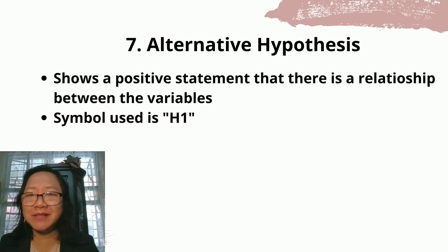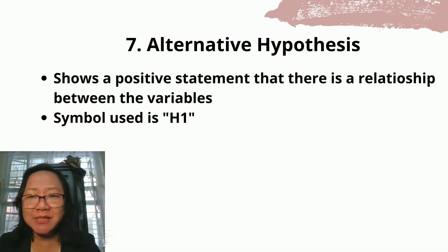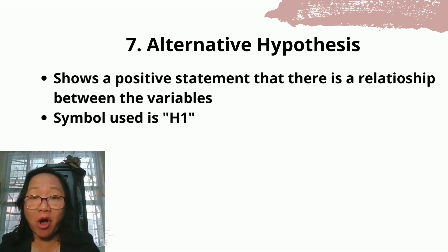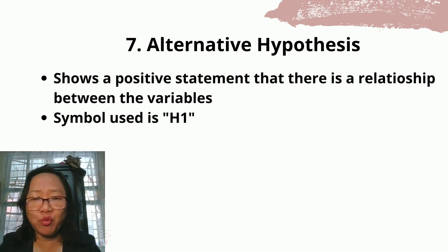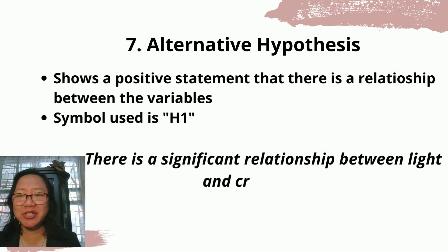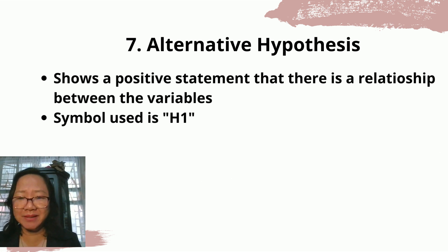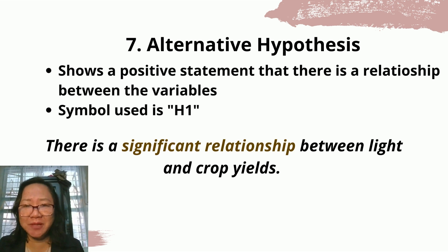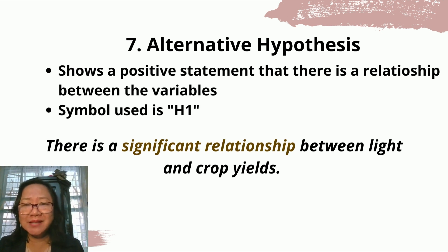The seventh type is alternative hypothesis. It shows a positive statement that there is a relationship between the variables — it is the opposite of the null hypothesis — and we use the symbol H1. Example: there is a significant relationship between light and crop yields. Hence, this is an example of alternative hypothesis.